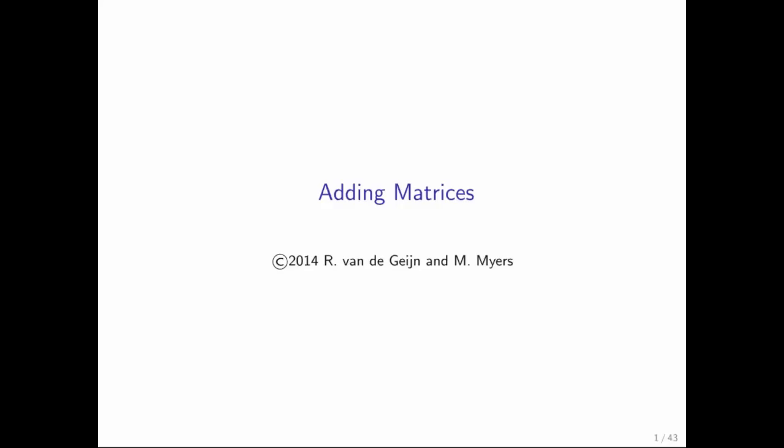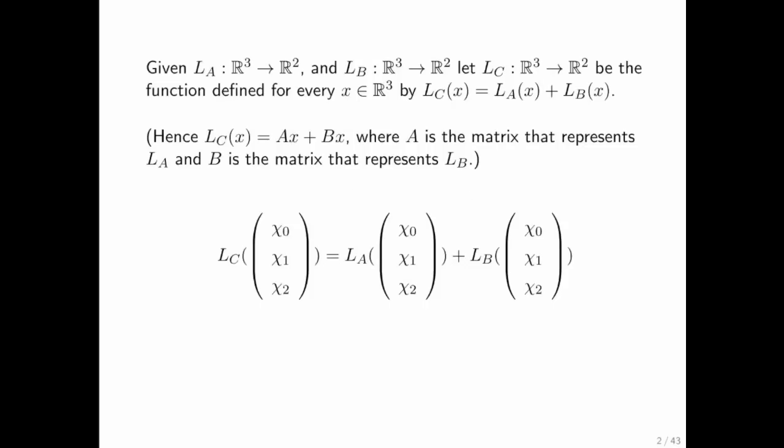How to add two matrices. Well, let's again do an example. We're going to start with two linear transformations. Both map from R³ to R². So both take vectors of size 3 and create vectors of size 2.